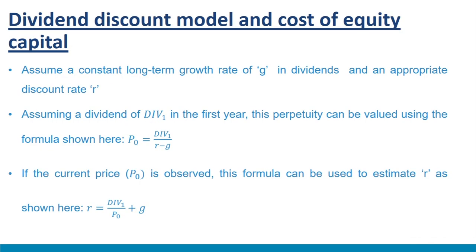Dividend discount model and cost of equity capital. We will understand the valuation of companies with growing earnings and dividends, and the relationship between growth, cost of equity, and dividend yield. Assume a constant long-term growth rate G in dividends and an appropriate discount rate R. This is similar to valuing a growing perpetuity. Assuming a dividend of Div₁ in the first year, this perpetuity can be valued using: P₀ = Div₁ / (R − G). Here G is the anticipated growth rate, and it must be less than R for this formula to remain viable. This formula explains the current price P₀ in terms of expected dividend Div₁, growth G, and expected return R.